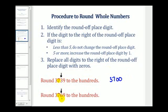However, on the second example, the digit to the right is a six, which means round up. So we change this seven to an eight, and then the digits to the right will be zeros. So this would round to 3800.